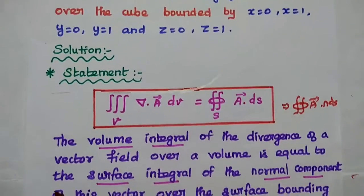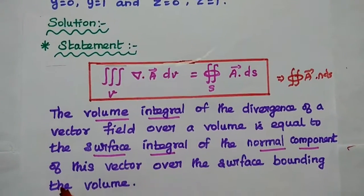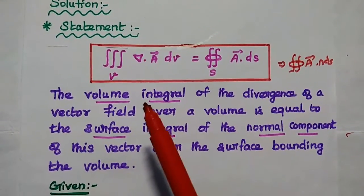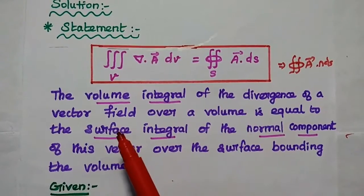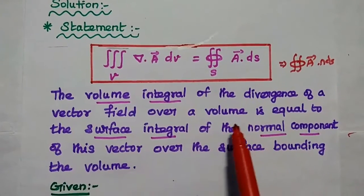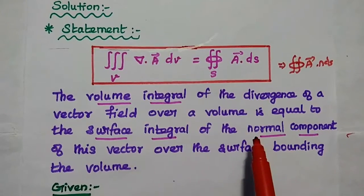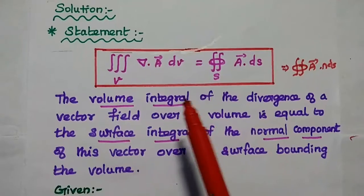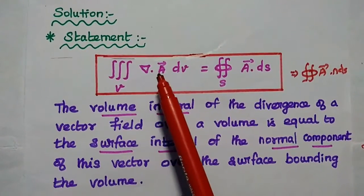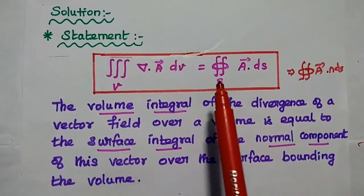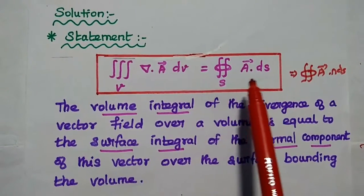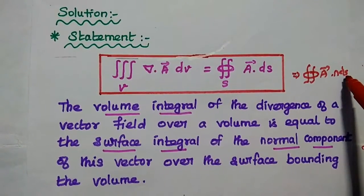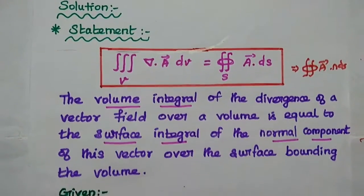In the solution part, first we have to write the statement of the divergence theorem. The divergence theorem relates the volume integral and surface integral: the volume integral of the divergence of a vector field over a volume is equal to the surface integral of the normal component of this vector over the surface bounding that volume. This can also be written as the integral of A dot N dS, where N represents the normal component.